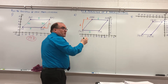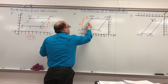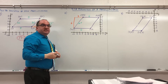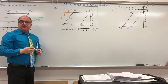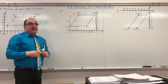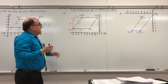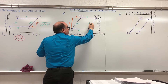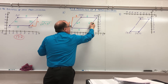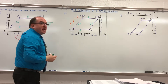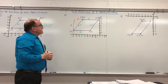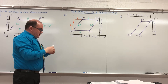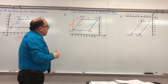We got 6.7. And if that side is 6.7, this side is also 6.7. So now we add them all up: 6 plus 6 plus 6.7 plus 6.7 equals 25.4.